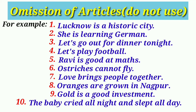When talking about something in general, for example: ostriches cannot fly. Before abstract nouns: love brings people together. Before plural countable nouns: oranges are grown in Nagpur. Before uncountable nouns: gold is a good investment. And when using expressions such as all night, by year, by sea, all day, by train, by bus — for example: the baby cried all night and slept all day.